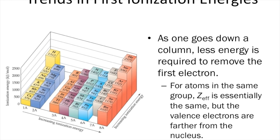As you go from top to bottom on the periodic table, you have a decrease in ionization energy. As you move down, you get more rings of electrons, which means those electrons are further away from the nucleus. From Coulomb's Law, the further away those valence electrons are from the nucleus, the less force of attraction they experience. So if they're experiencing less force of attraction, you can remove them easier.